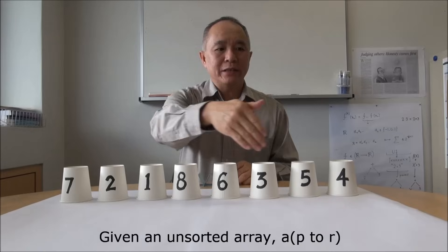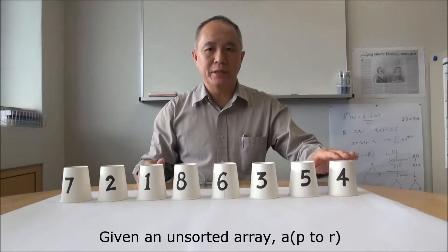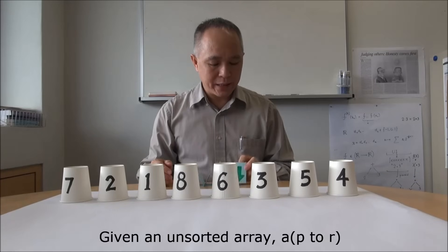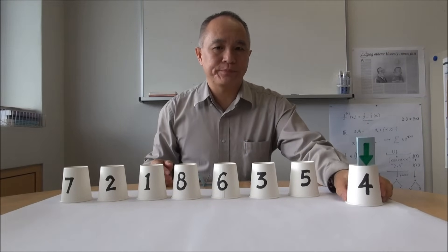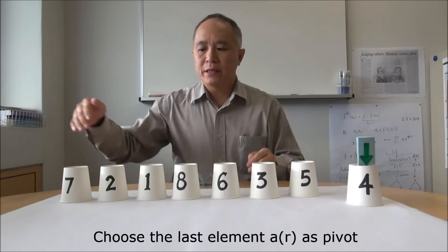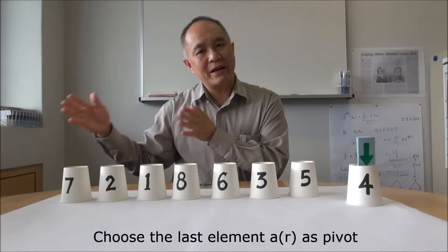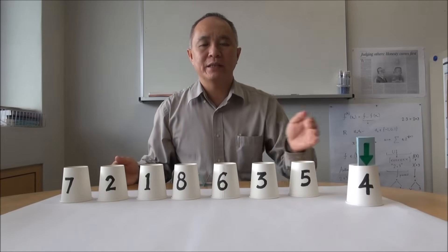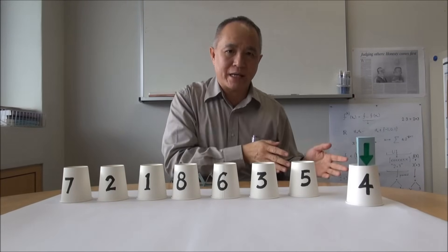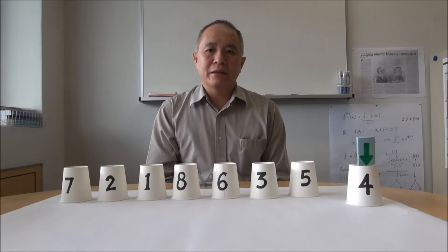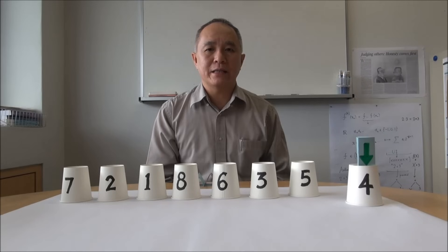Given an unsorted array, this is the first element and this is the last element. We might start by choosing the last element as our pivot. We want to find its position somewhere so that on the left side of this pivot are all elements less than the pivot value itself, and on the right side are elements which have values greater than this pivot.